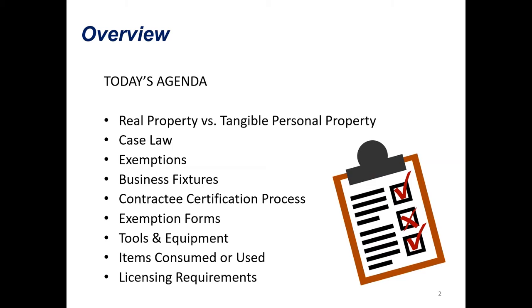We're going to talk about some examples of business fixtures and some of the differences between real property and business fixtures. We're also going to go over the contract decertification process—exactly what it is, when you would use it, and what types of situations you would need to get that as a contractor. Next, we're going to go over some common exemption forms that contractors would typically use—the STEC-CC and the STEC-CO. Then we're going to move on to talking about the taxability of tools and equipment and items consumed or used in the construction process. Finally, we're going to wrap up talking about licensing requirements as a contractor.